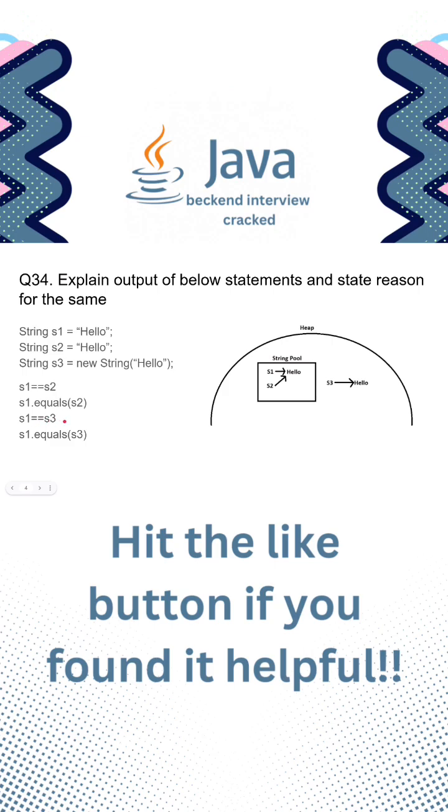s1 == s3 will be returning false because hello in s3 is a new object in the heap and not in the string pool.